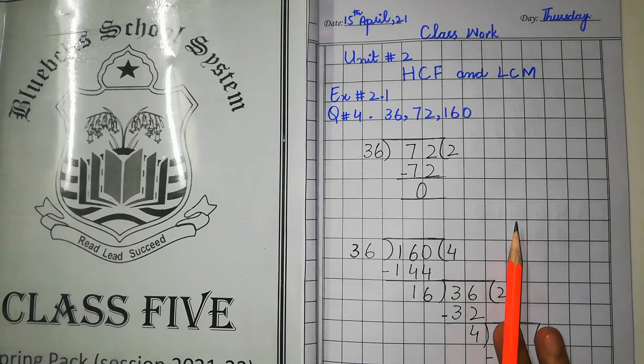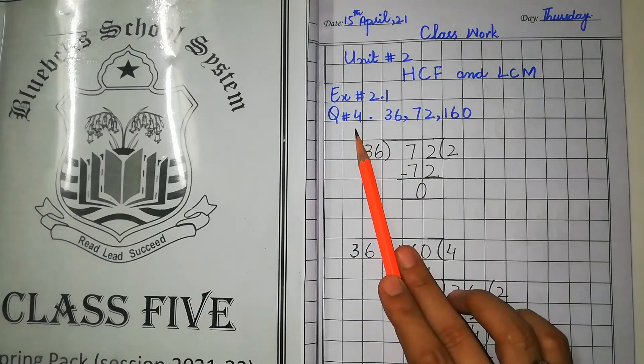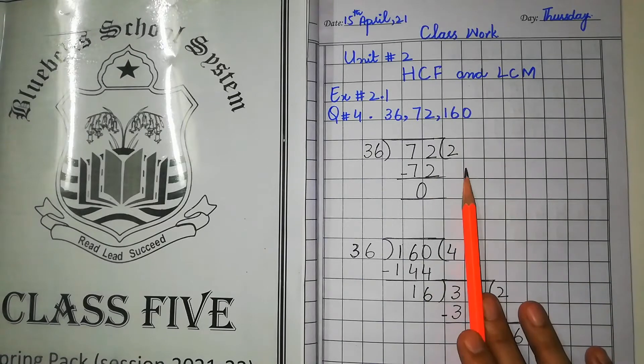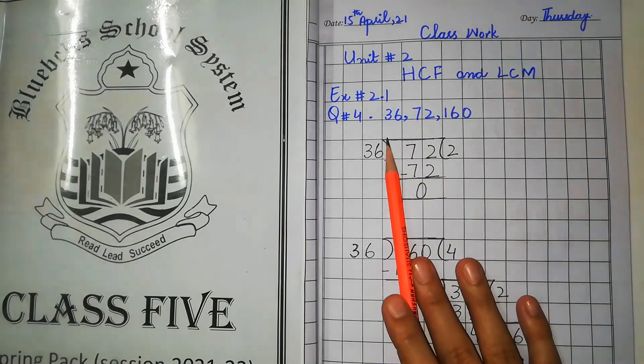Students, question number 4: 36, 72, and 160. Now, we will divide this first and first, 36 and 72.